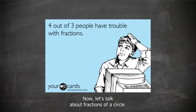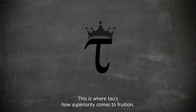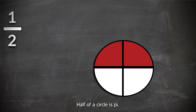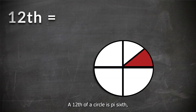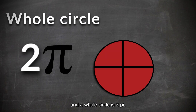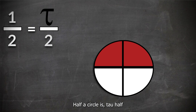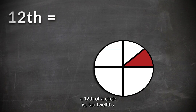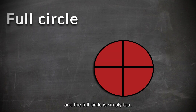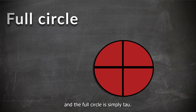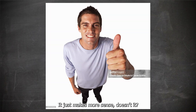Now let's talk about fractions of a circle. This is where Tau's superiority comes to fruition. With pi, it's quite confusing — half of a circle is pi, a twelfth of a circle is pi sixths, and a whole circle is two pi. Now enter Tau: half a circle is Tau over two, a twelfth of a circle is Tau over twelve, and a full circle is simply Tau. It just makes more sense, doesn't it?